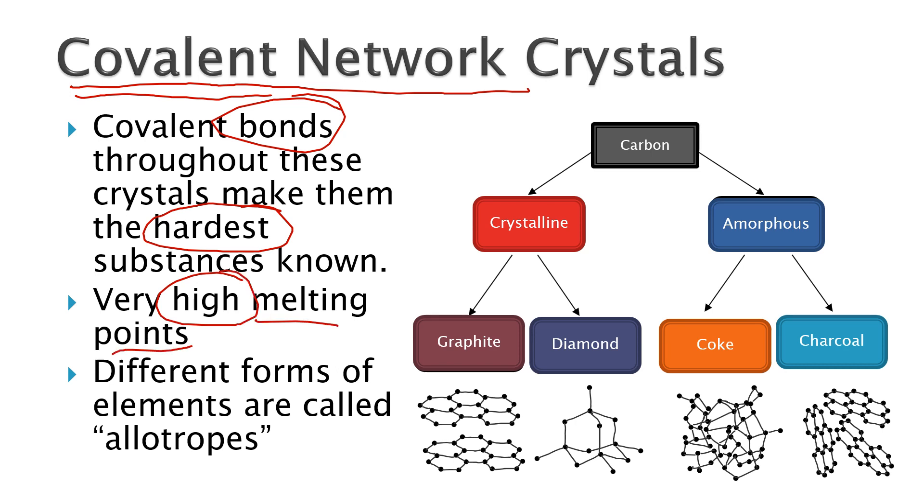When you have more than one form of covalent network, it's called an allotrope. And so there's a bunch of allotropes here for carbon, which is a famous one to learn about. The crystalline allotropes are things like diamond that has this nice repeating pattern of carbon atoms in three dimensions. The other one you've probably heard of is graphite. Graphite in your pencil will have these little sheets that can rub off one after another.